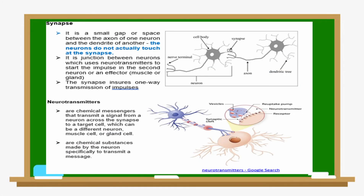The synapse is a small gap or space between the axon of one neuron and the dendrite of another. Neurons do not actually touch at the synapse. It is a junction between neurons which uses neurotransmitters to start the impulse in the second neuron or an effector, and it ensures one-way transmission of impulses. Neurotransmitters are chemical messengers that transmit a signal from a neuron across the synapse to a target cell, which can be another neuron, a muscle cell, or a gland cell.